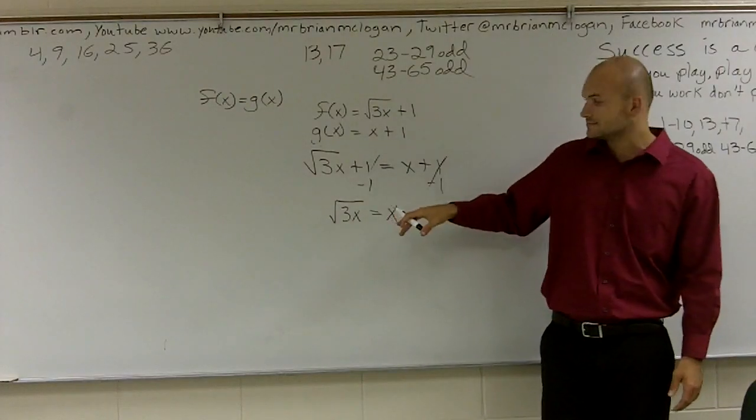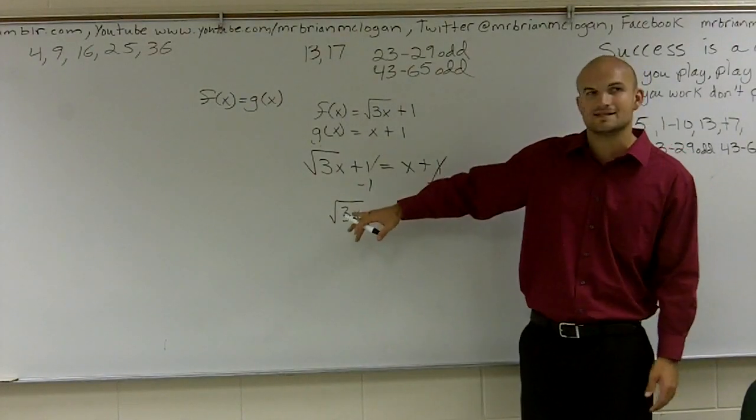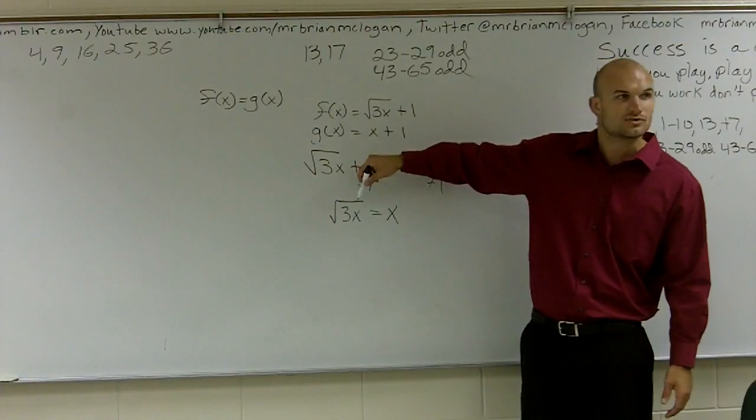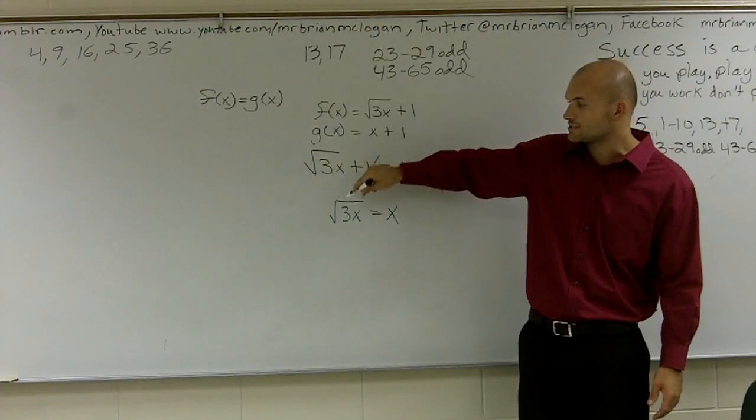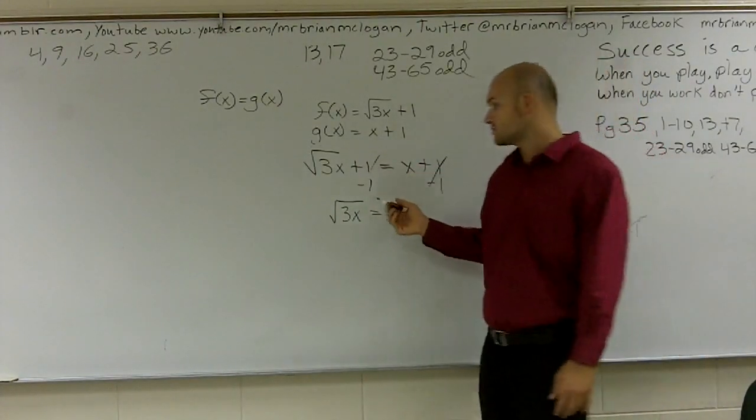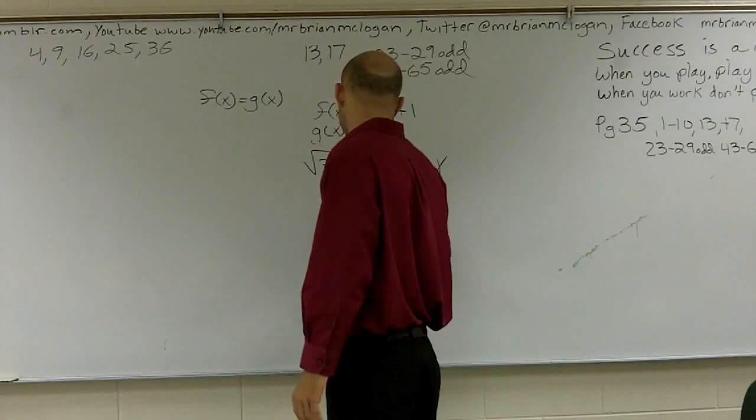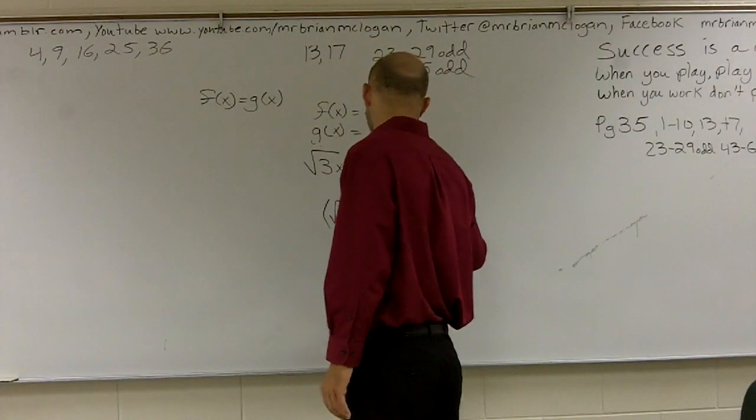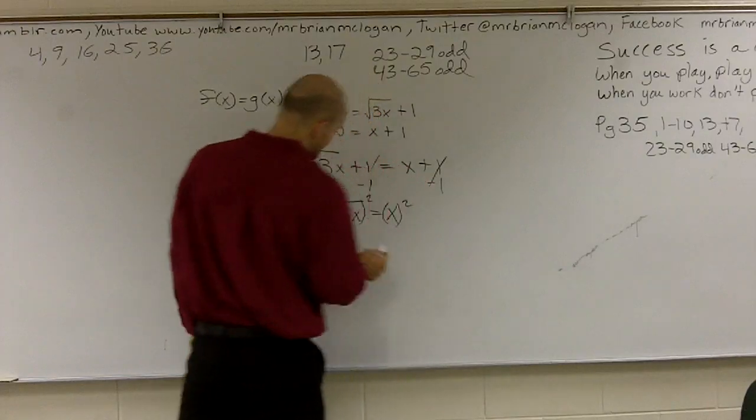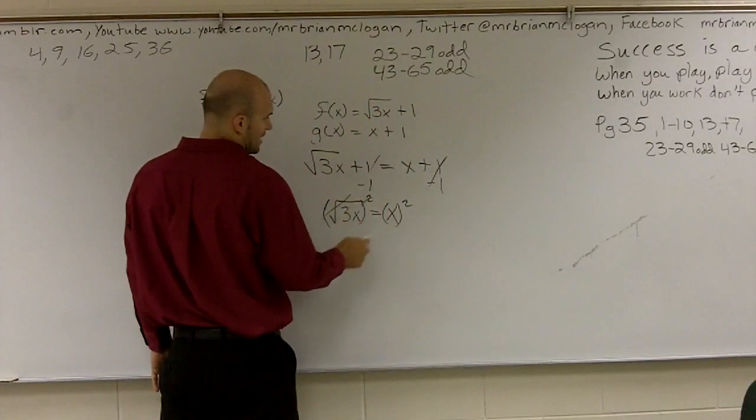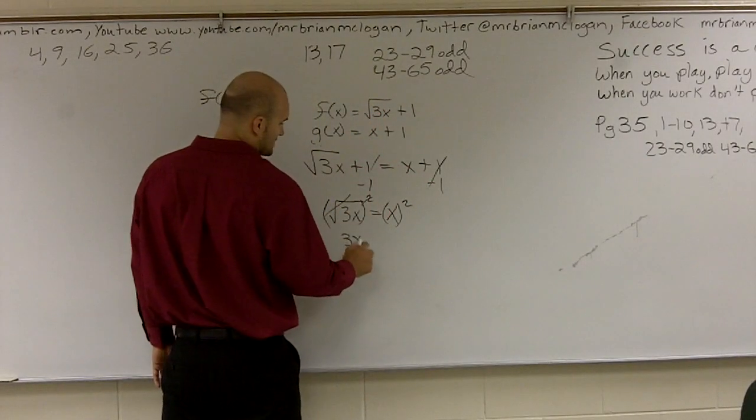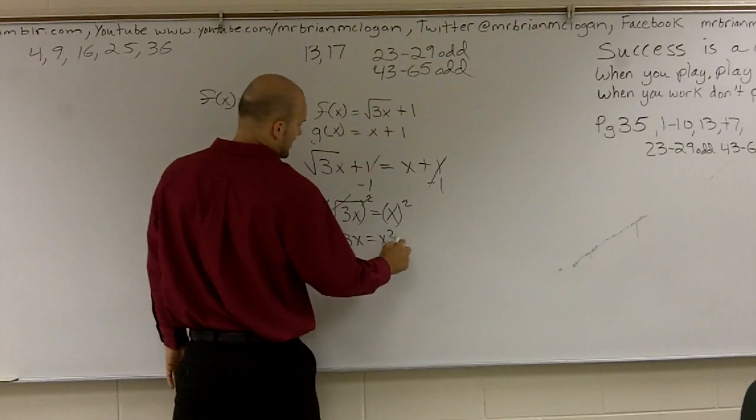So again, before I go ahead and get this x over to the same side though, I'm going to want to get rid of the square root. So that's exactly what I'm going to do. To get rid of the square root, I can square both sides. And so that's going to go ahead and cancel out. So therefore I'm left with 3x equals x squared.